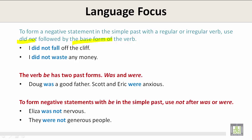I did not waste any money. The verb 'be' has two past forms: was and were. Doug was a good father — singular. Scott and Eric were anxious — plural. To form negative statements with 'be' in the simple past, use not after was or were. For example: Elisa was not nervous. They were not generous people.